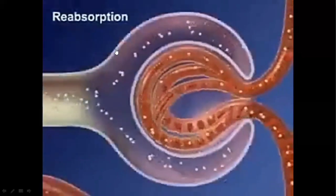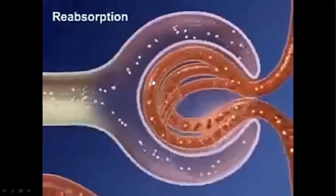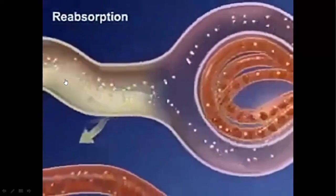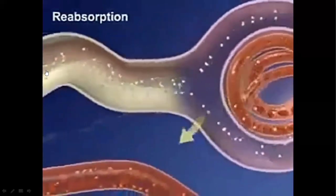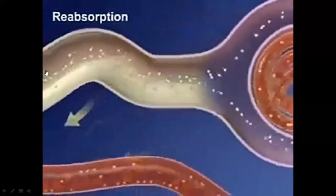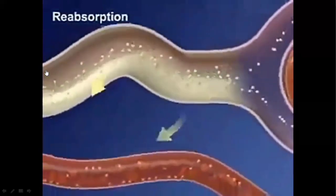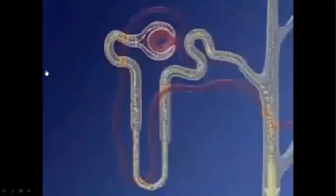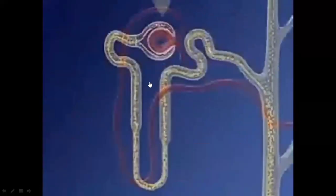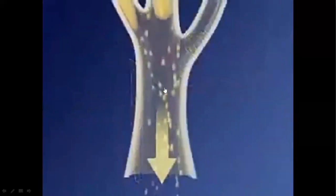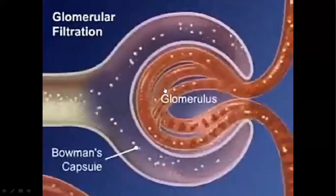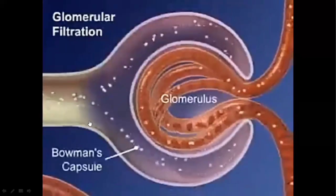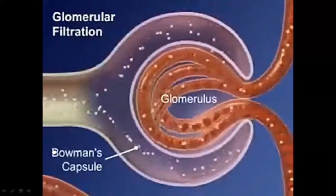All substances are filtered in the form of filtrate, and this filtrate then moves down into the tubules. From the tubules, useful substances are reabsorbed back into the blood depending on the needs of the body, and all other waste products are removed in the form of urine.